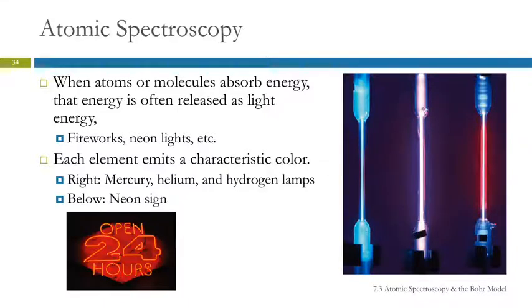If you make a similar lamp or light with a different element in it, you see mercury glows with more of a pale blue. Helium is violet, and hydrogen has its own color. Each element emits a characteristic color.